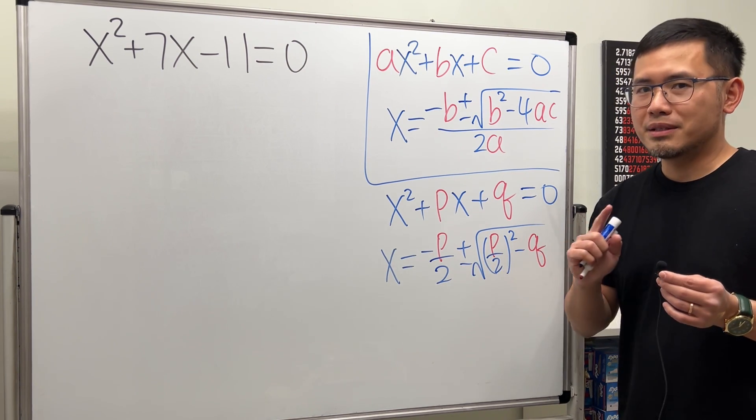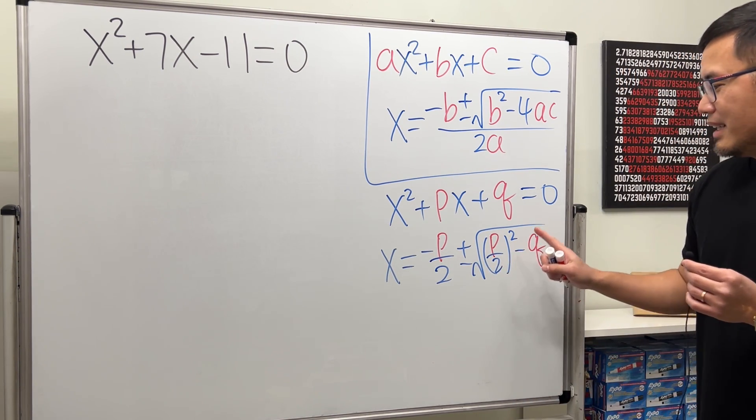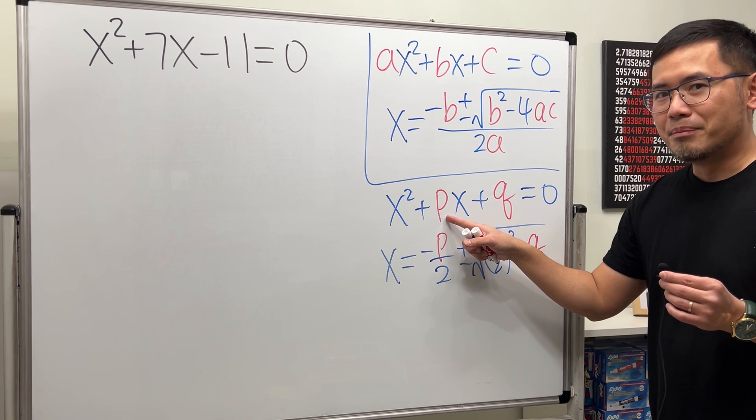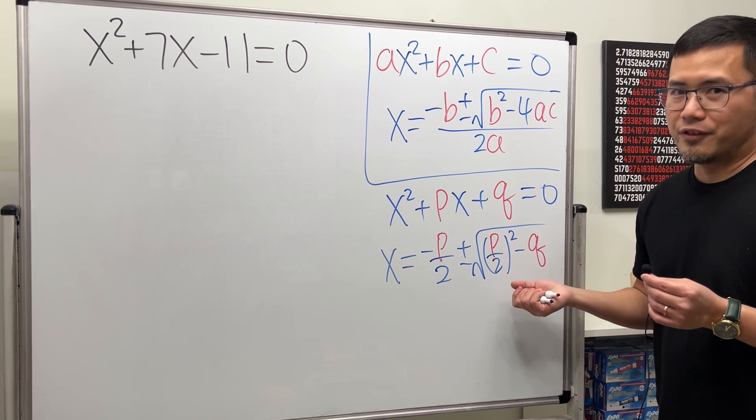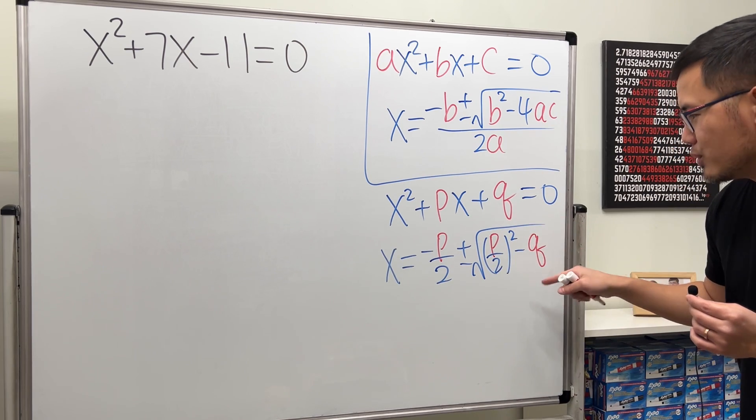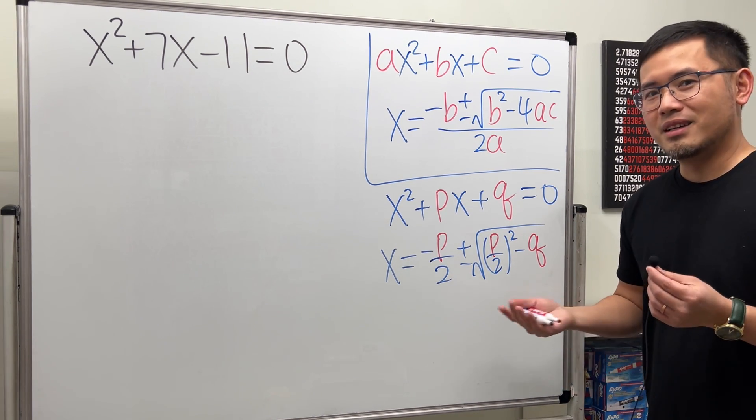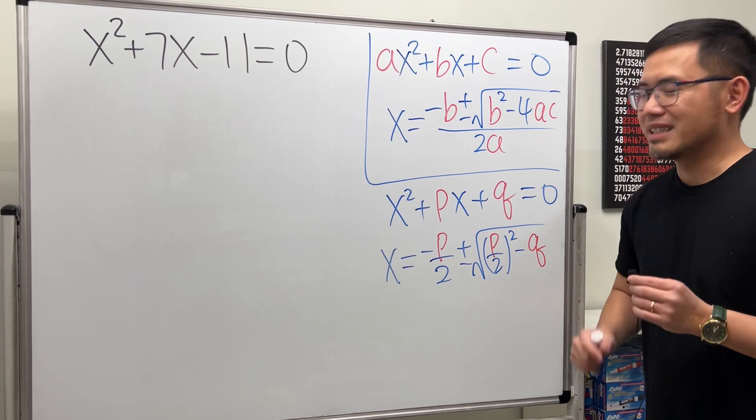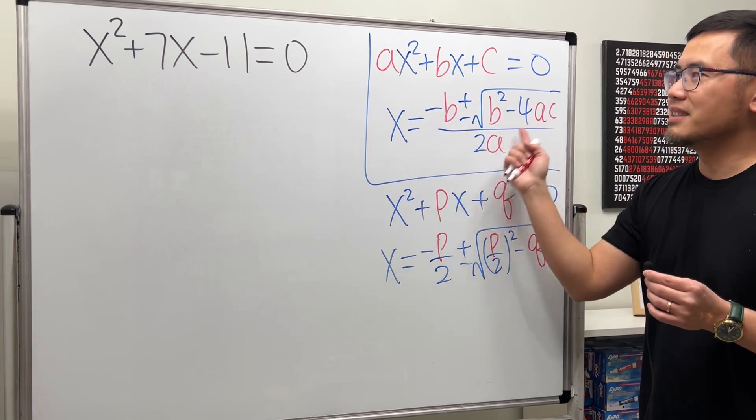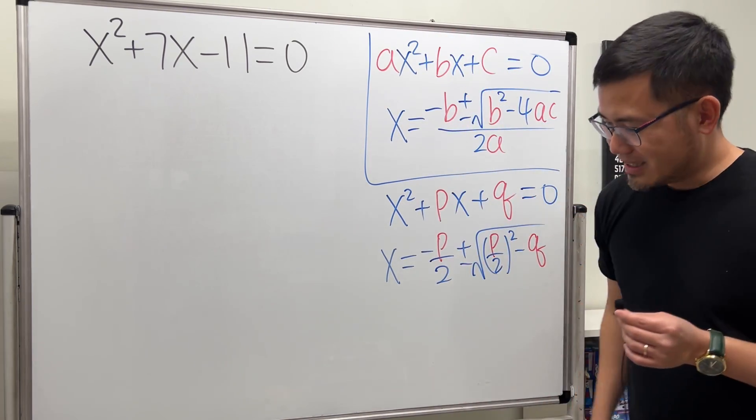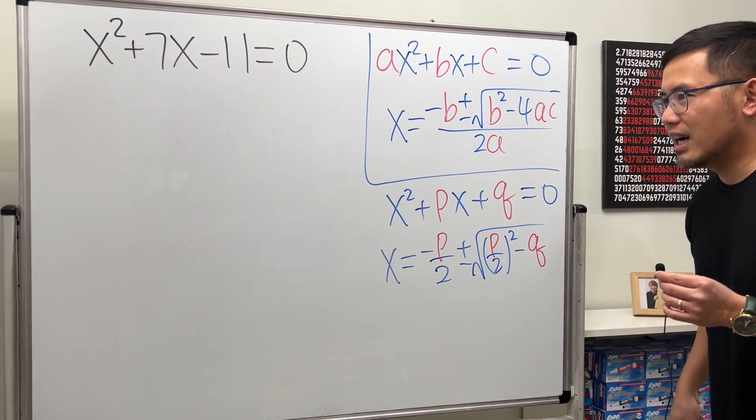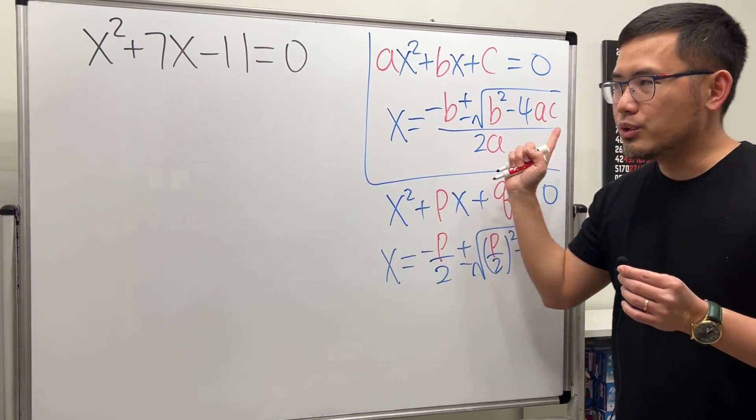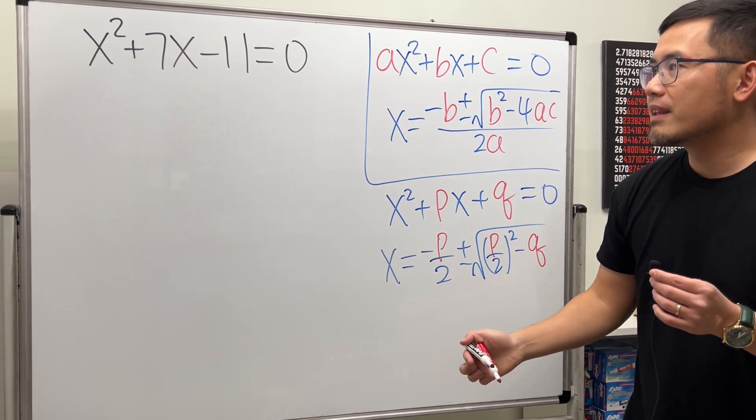But here's the thing though: here p is an odd number. So if you do p divided by 2 and then square, you end up with a fraction instead of the square root. This right here might not be a good idea in my opinion. You can try it, but let's just go with the classic quadratic formula.